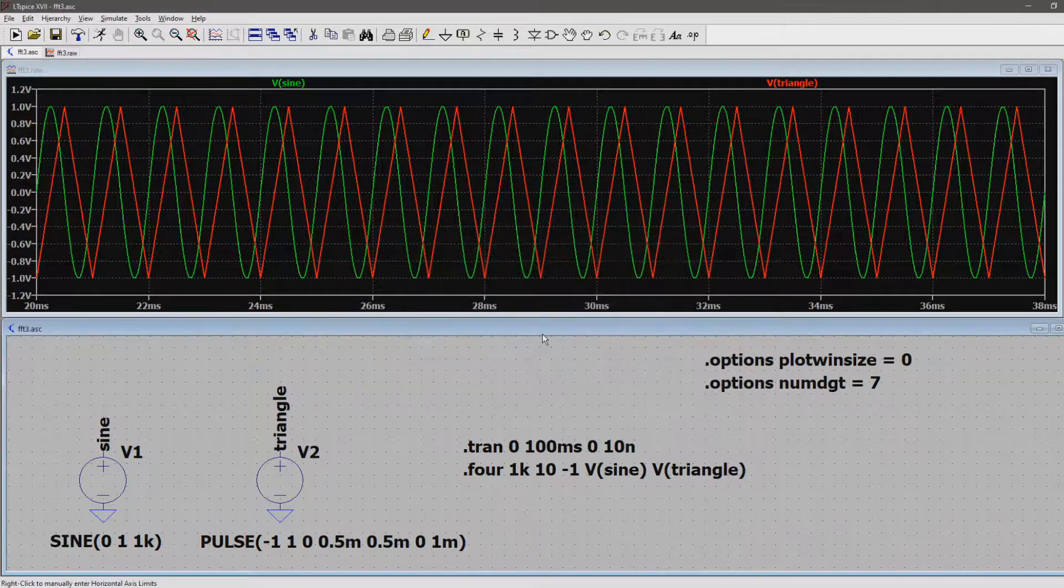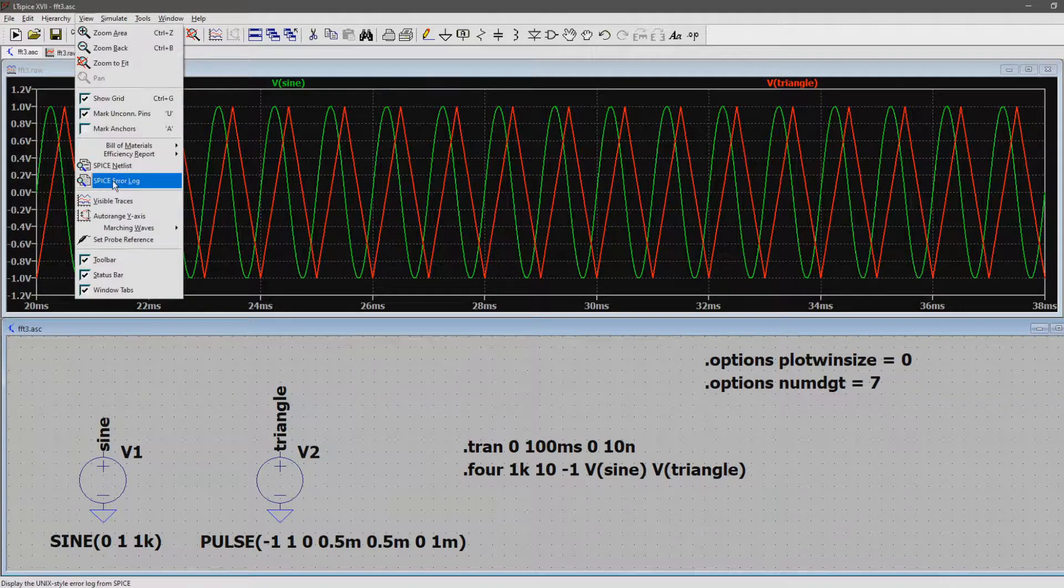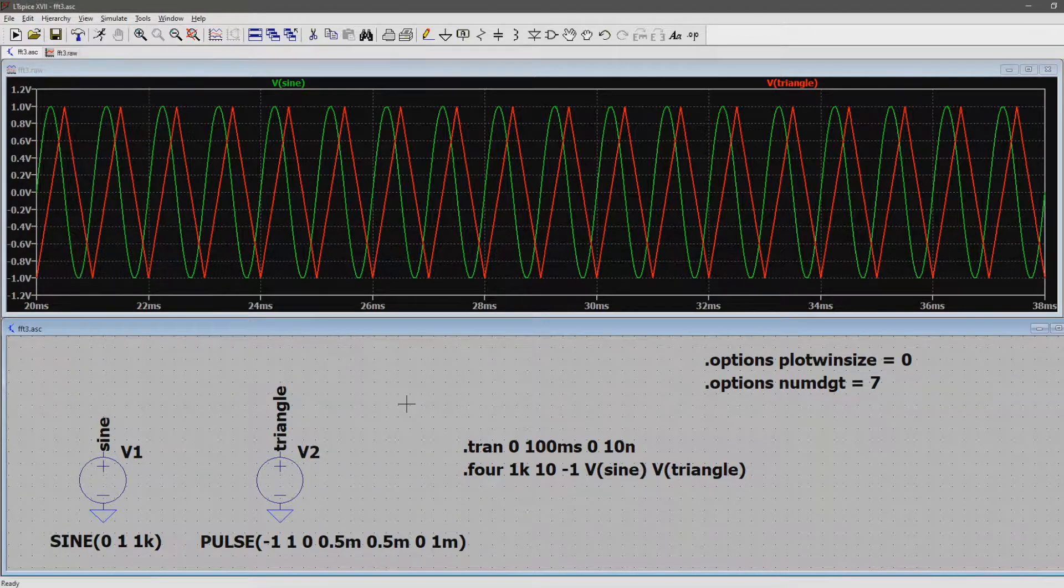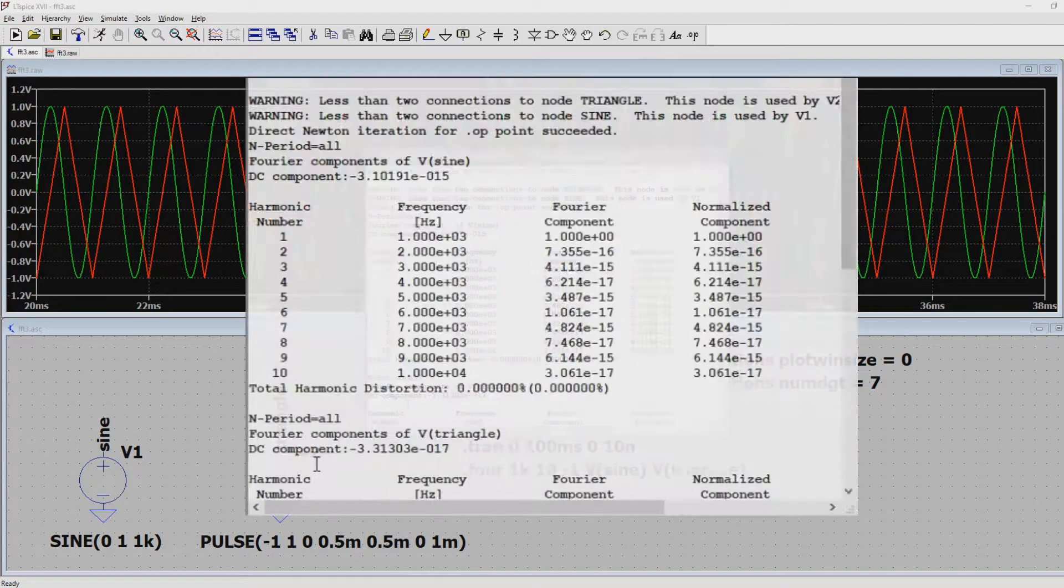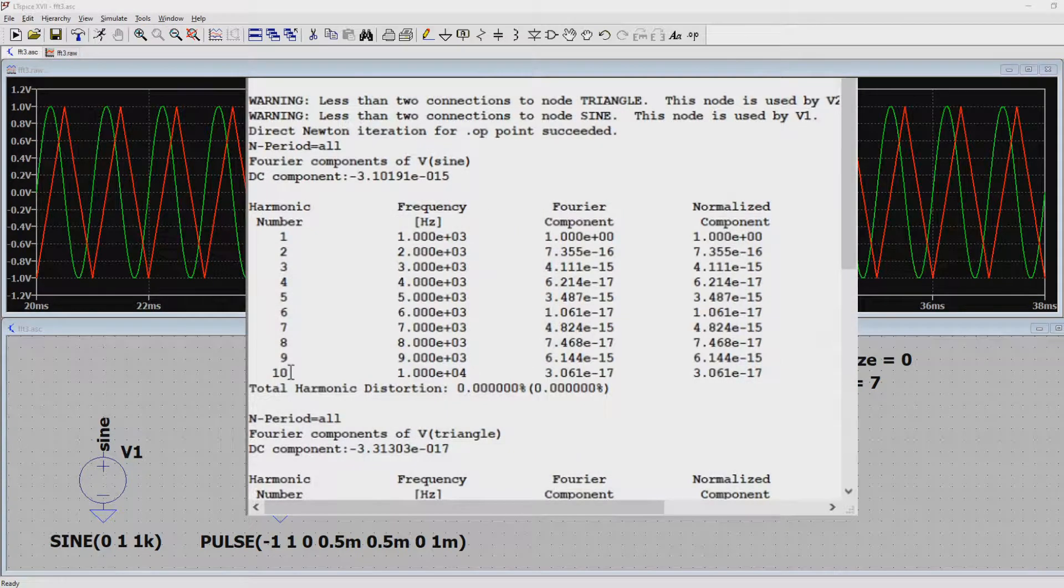To find out what the answer is from the Fourier function, go to View, Spice Error Log or more easily press Ctrl L. A new window pops up with all kinds of data.